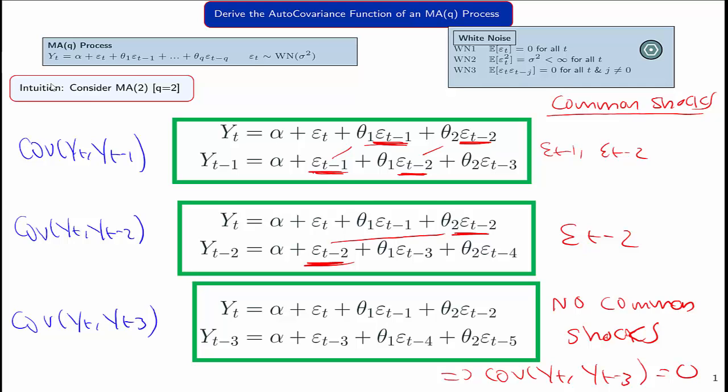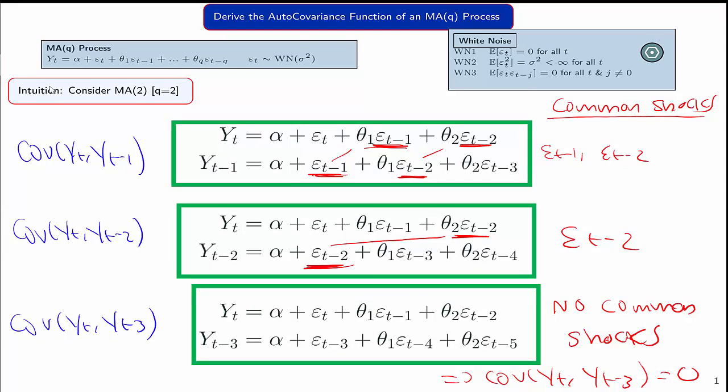For an MA(2) process, any lag after 2 must be uncorrelated because there's no concurrent shocks. This is the case for any MA(q) model. For an MA(q) model, there can only be covariance up to lag q. After that, all the covariances are naught because there's no concurrent shocks. So we just have to derive the covariance for the MA(q) up to lag q, and then from then on, they're all equal to naught.